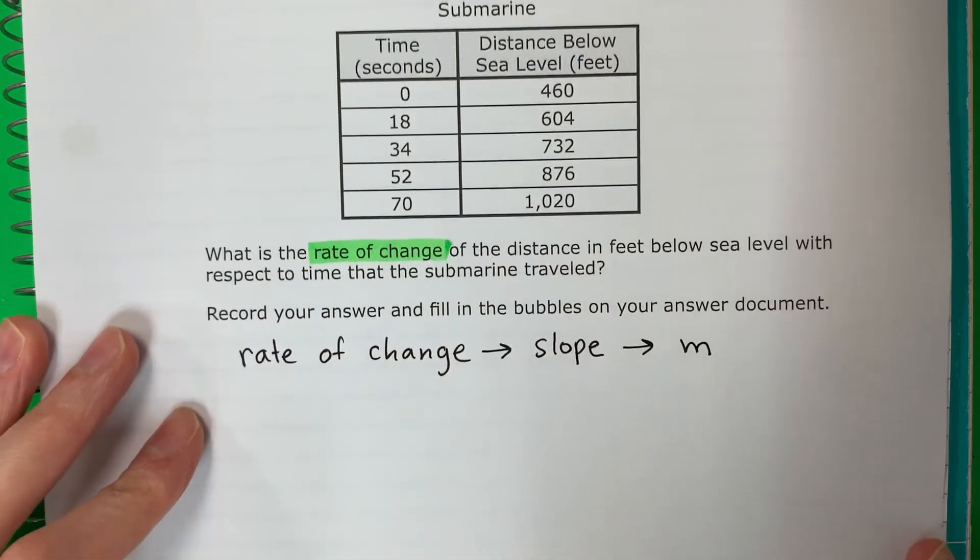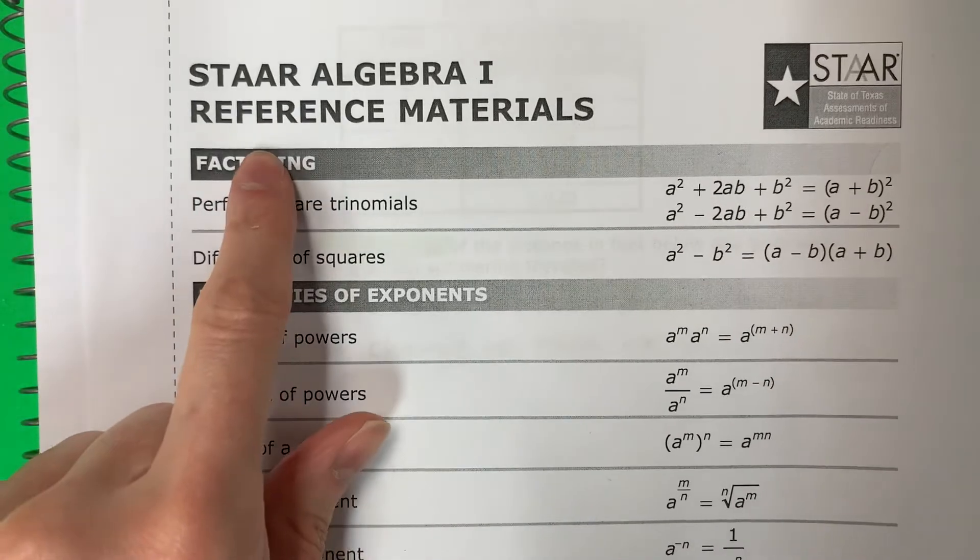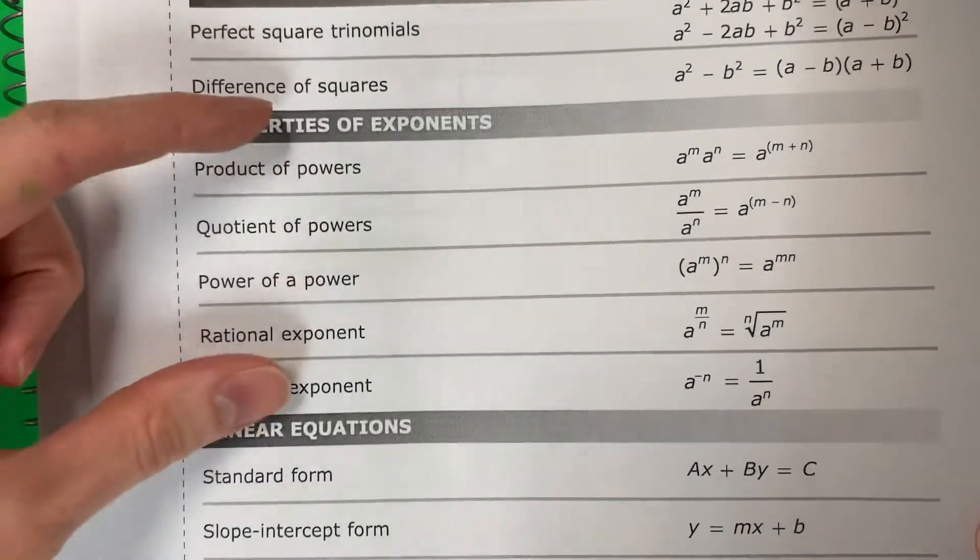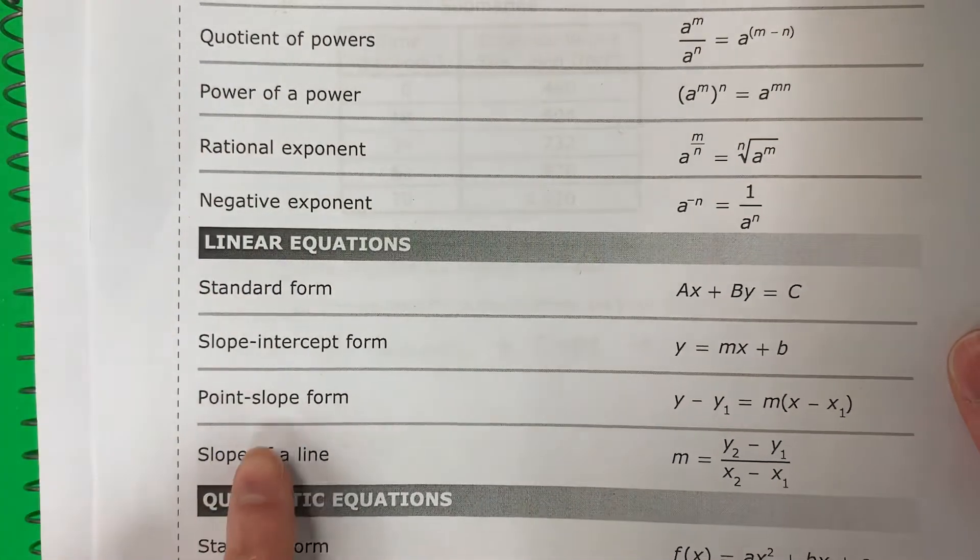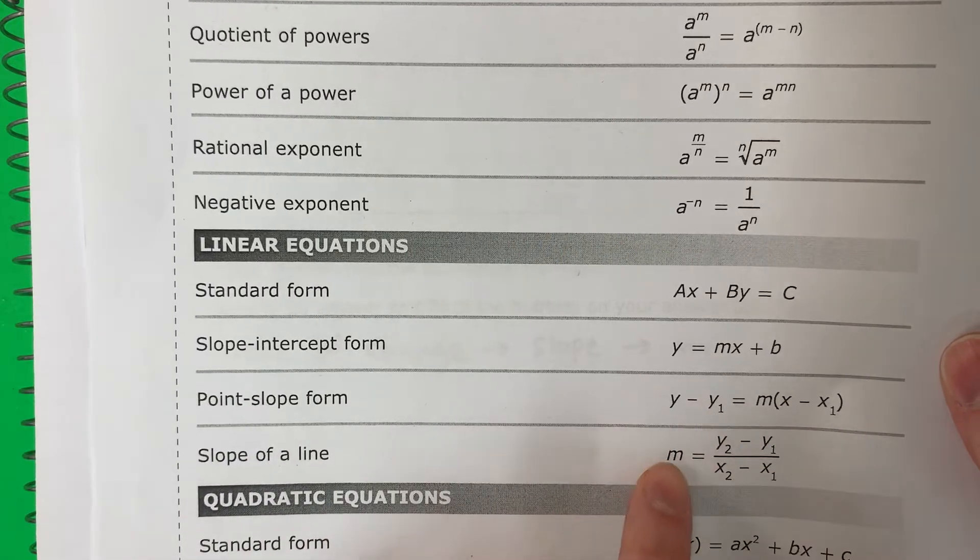And there's a formula for that. ¿Y hay una fórmula por eso? So we're going to go ahead and take our reference materials sheet. You're going to go to the third section, el tercer sección. Here is slope. Here is M. This is the formula you will do.